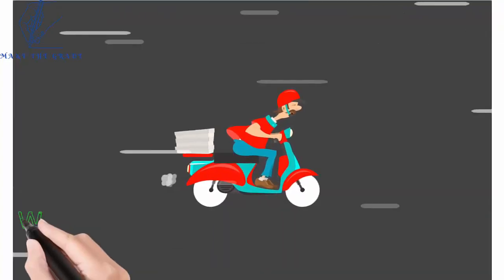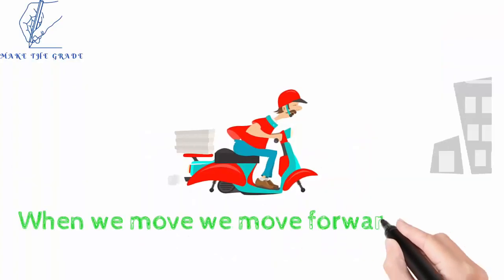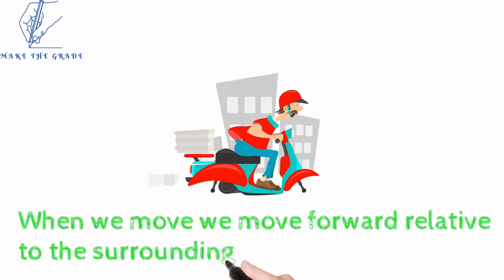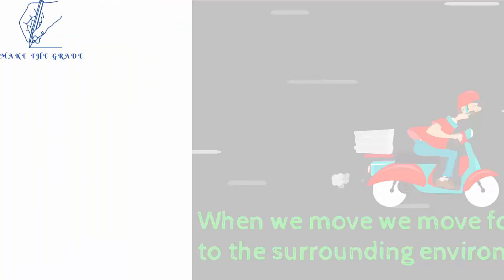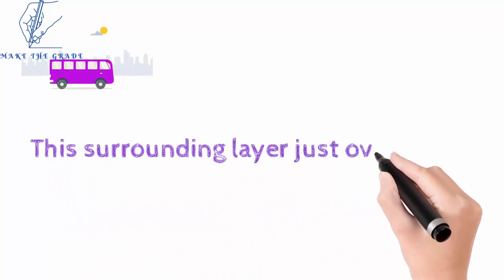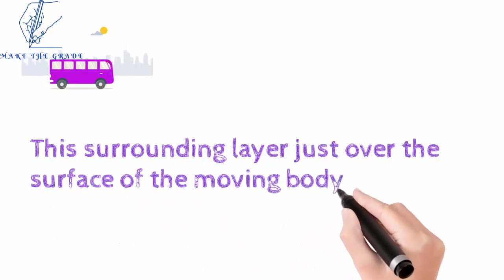When we move forward, the environment surrounding us moves backwards relative to our movement. This surrounding, just over the surface of the body that is in contact with the surface, gives us a resistance force to move forward.